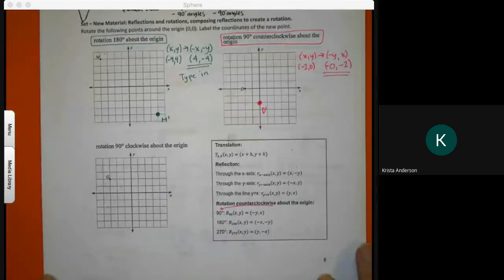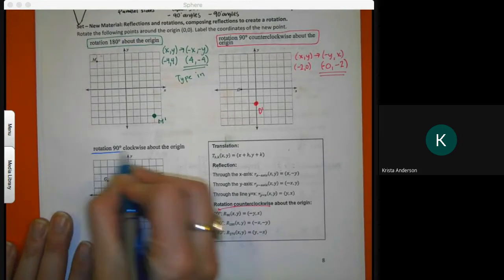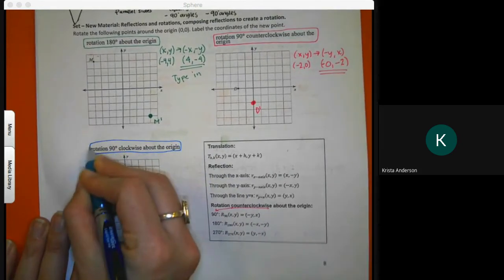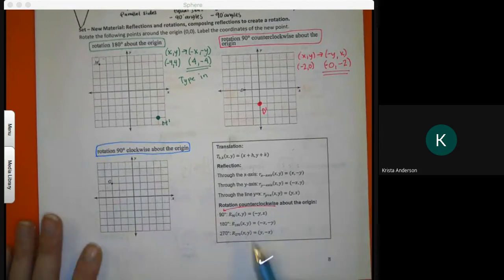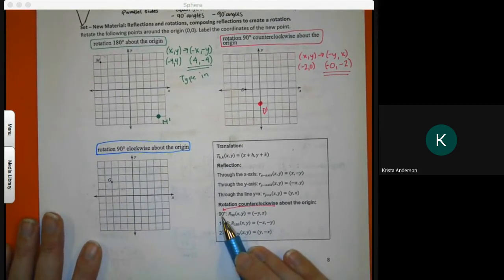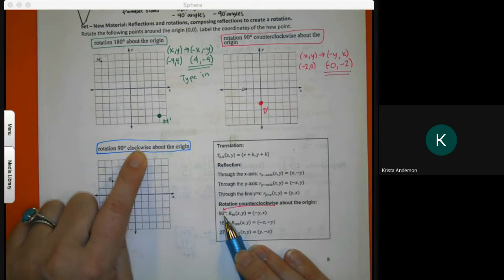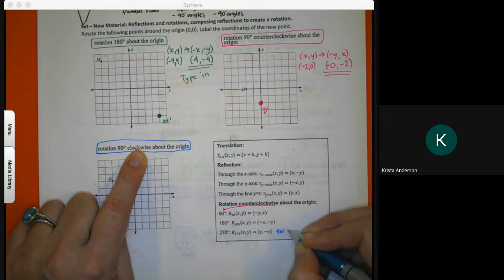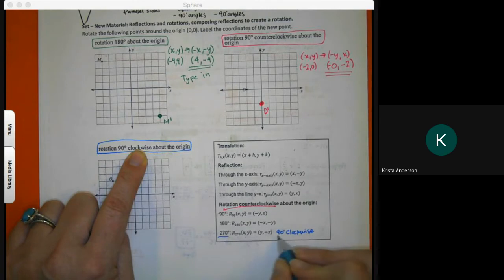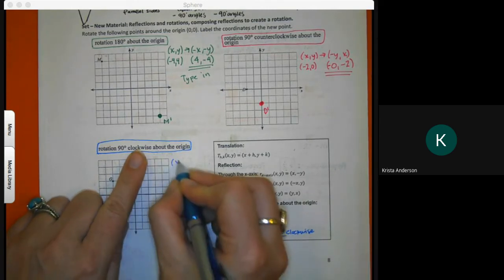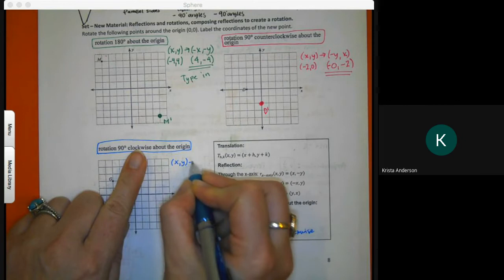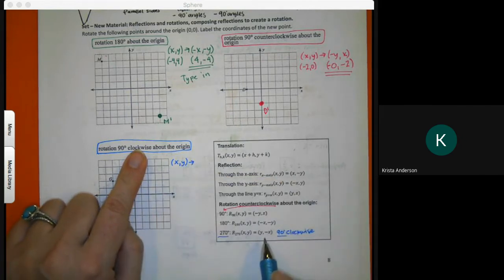What if it asks for 90 degrees clockwise? On our note cards we made a little note. This 90 degrees is counterclockwise. Do you remember which one I use for clockwise? Good job. So I'm going to write x comma y, and it goes to y comma negative x.